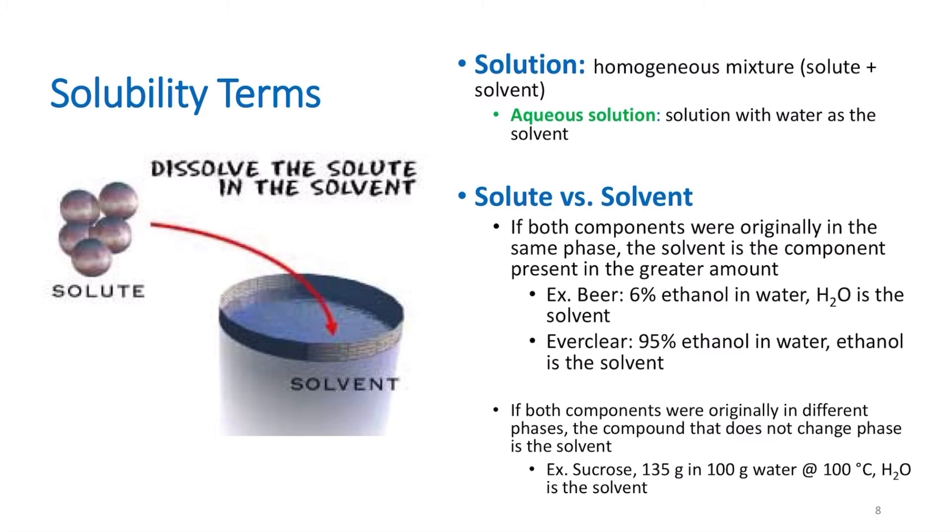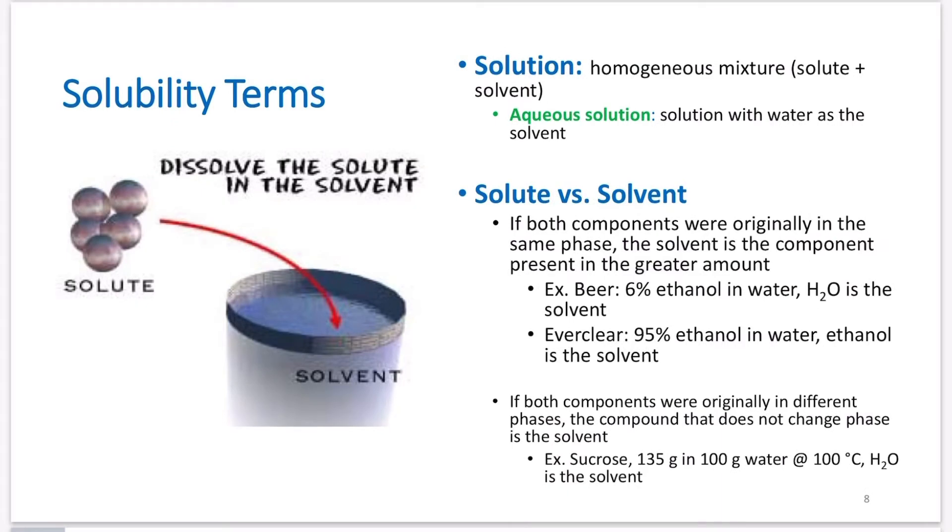Now, if both components were originally in different phases, the compound that does not change phase is the solvent. So if I dissolved sucrose in water, sucrose is a solid at room temperature, water is a liquid. The sucrose will dissolve and go into the solution. In that case, the sucrose is changing phase. So therefore, by definition, the sucrose is my solute. 135 grams of sucrose in 100 grams of water at 100 degrees C, but water is still the solvent, even though it was technically present in a smaller amount. So solute, what did you dissolve? And that either changed phase, or if both solvent and solute were in the same phase, it was present in the smaller amount. Solvent, what did you dissolve it in? So it's either the component that did not change phase at all, or if they were both in the same phase to start, it's the substance that was present in a greater amount.